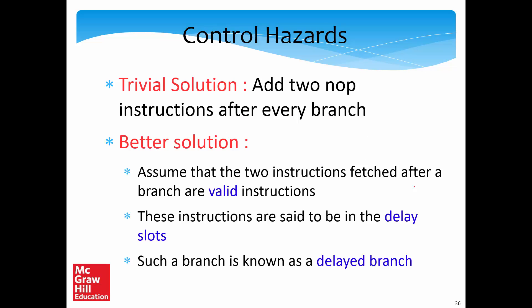We have some solution for data hazards. Let's now look at control hazards. The trivial solution is to add two NOP instructions after every branch. The control hazard is resolved in the EX stage, so there may be two incorrectly-fetched instructions in the previous two stages. One idea is to simply send two NOP instructions after every branch, then send the right instruction — either from the branch target or the instruction just after the branch.